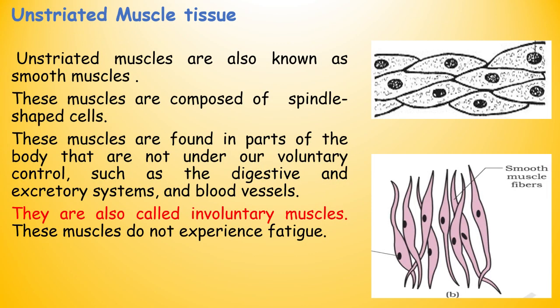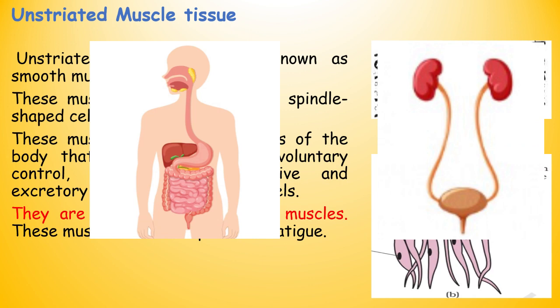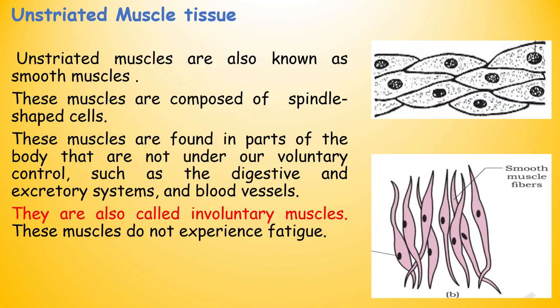Unstriated muscles are also known as smooth muscles. These muscles are composed of spindle-shaped cells. These muscles are found in parts of the body that are not under our voluntary control, such as the digestive and excretory systems and blood vessels. They are also called involuntary muscles. These muscles do not experience fatigue.